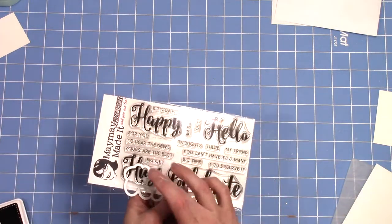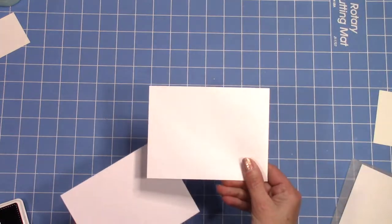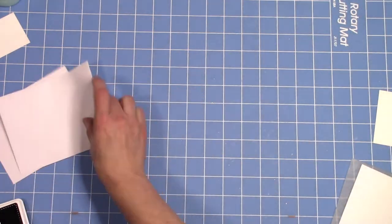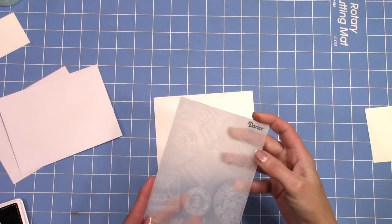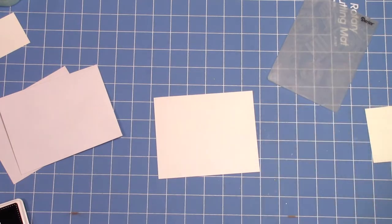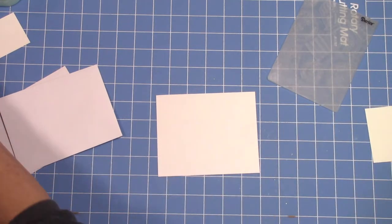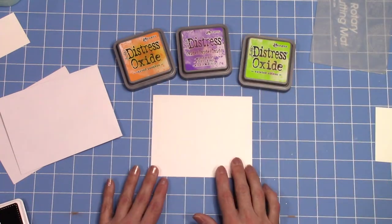The first one is called Big Time Sayings and that is the one with the happy, hello, hugs, and celebrate on it. The other one is called It's in the Mail. We are going to be using just a standard A2 size card base and envelope. This one has postal markings all over the embossing folder and we're going to be using that.